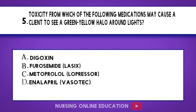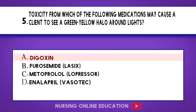Question 5. Toxicity from which of the following medications may cause a client to see a green-yellow halo around lights? A. Digoxin. B. Furosemide (Lasix). C. Metoprolol (Lopressor). D. Enalapril (Vasotec). The answer is option A: Digoxin.